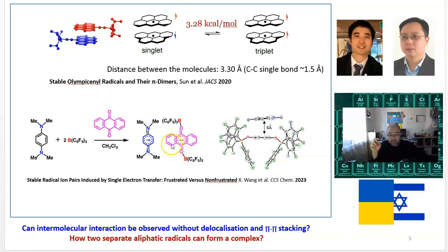In a more recent publication from Professor Wang's group, a radical pair was reported in which the radicals are not identical—that's even more interesting. They're held not only by pi-pi interaction but also by electrostatic forces because they have opposite charges. The distance between the radicals is even longer, however the singlet-triplet gap is also close to zero.